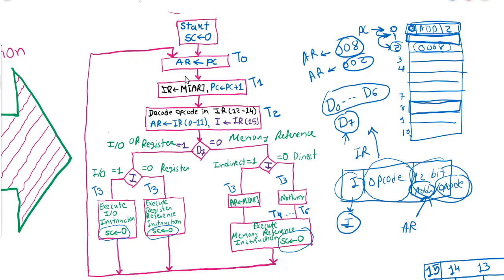In the next video, we will combine the instruction cycle with the timing and control unit of the basic computer, stored program organization, and the common bus system. We will merge all four core concepts to understand how all individual components work together to execute instructions. That is sufficient for today. Thank you.